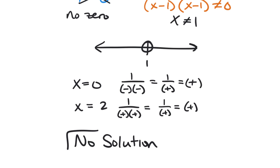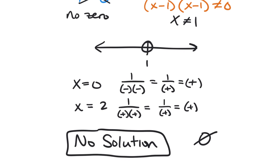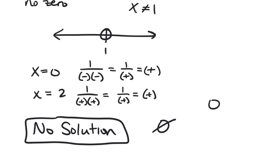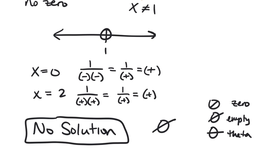There is a mathematical symbol for no solution — the empty set. Be careful: a zero (0), the empty set symbol (∅), and theta (θ) are three different things mathematically. Don't slash your zeros because you might accidentally write the empty set. Theta is a Greek letter we'll use frequently in trigonometry, where it usually stands for an angle.